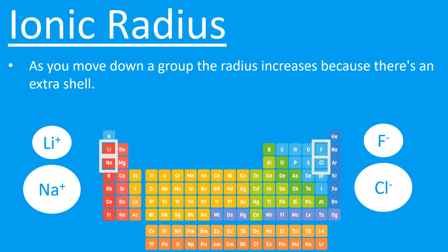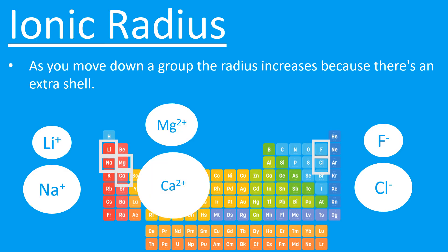Looking at group one: lithium and sodium are both +1, however sodium is below lithium in the periodic table so it has a bigger radius — the charge is more spread out and less dense. Lithium has a bigger charge density and would be more attractive, forming stronger ionic bonds. For group two, magnesium versus calcium shows the same trend — both are +2, but calcium is below magnesium and has a bigger radius, giving it a smaller charge density and making it less attractive. Magnesium has a smaller radius, bigger charge density, and forms stronger bonds.